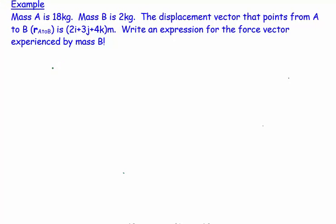Welcome. This question says mass A is 18 kilograms, mass B is 2 kilograms, the displacement vector that points from A to B is given by this IJK vector.